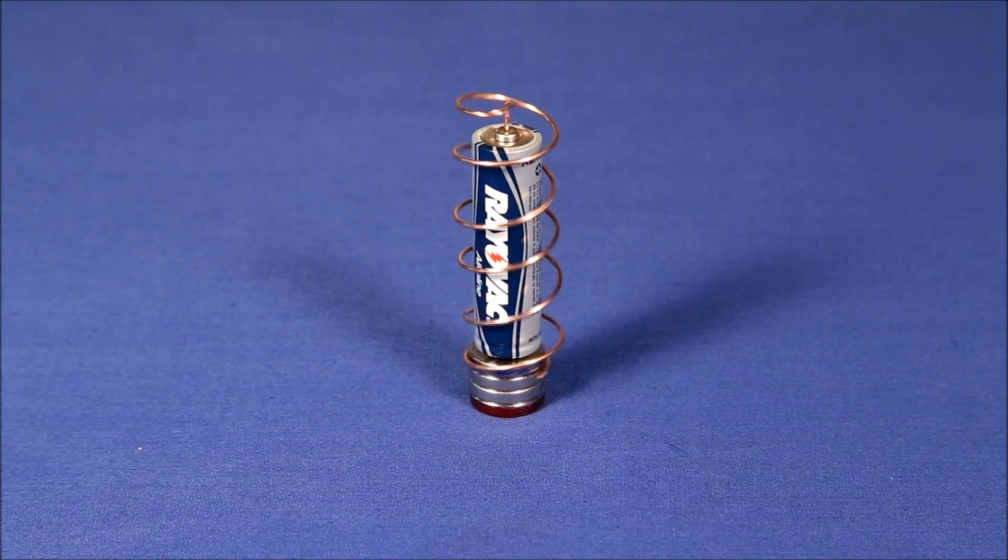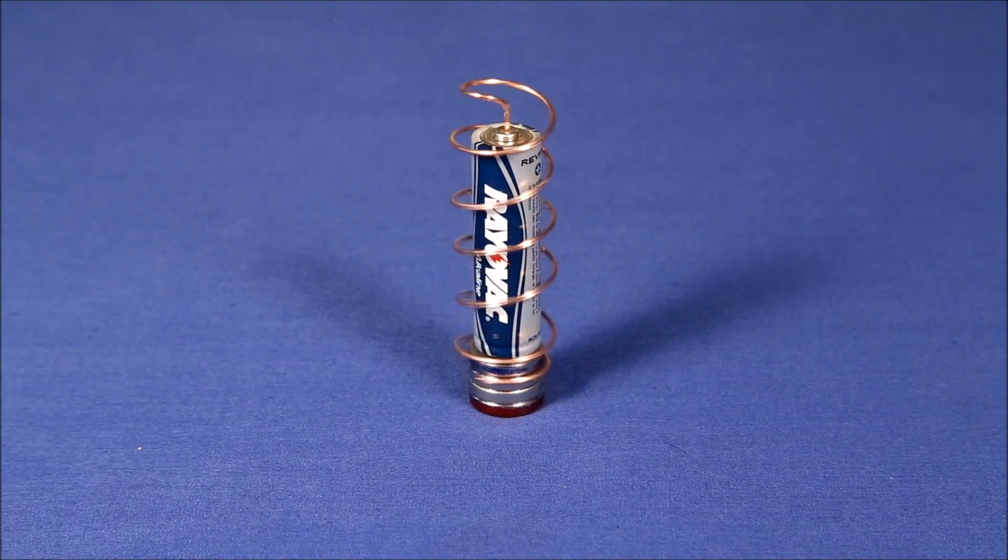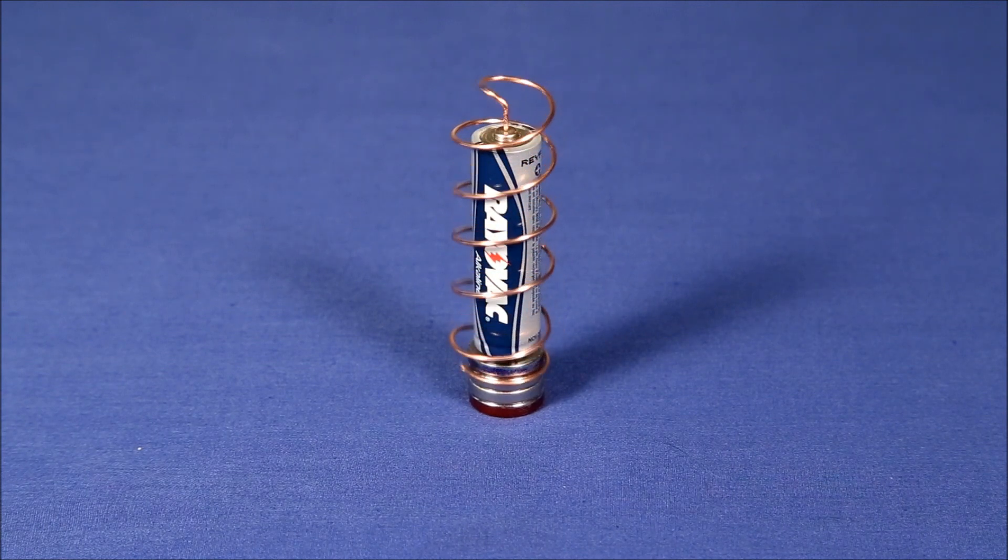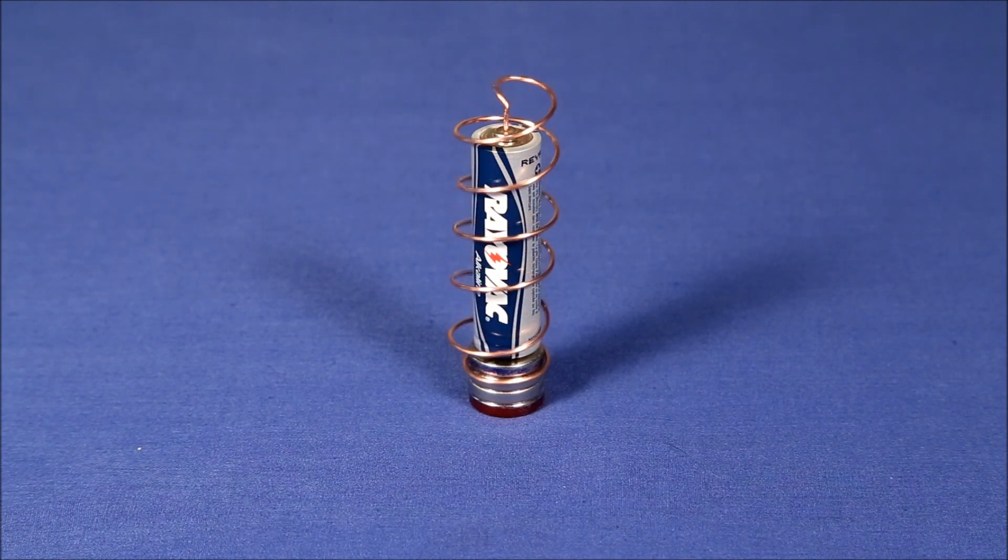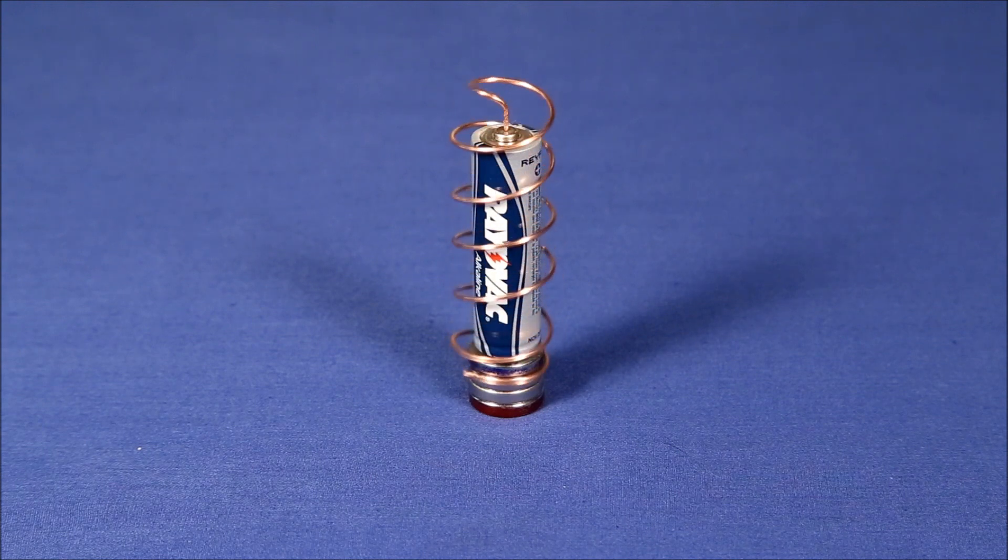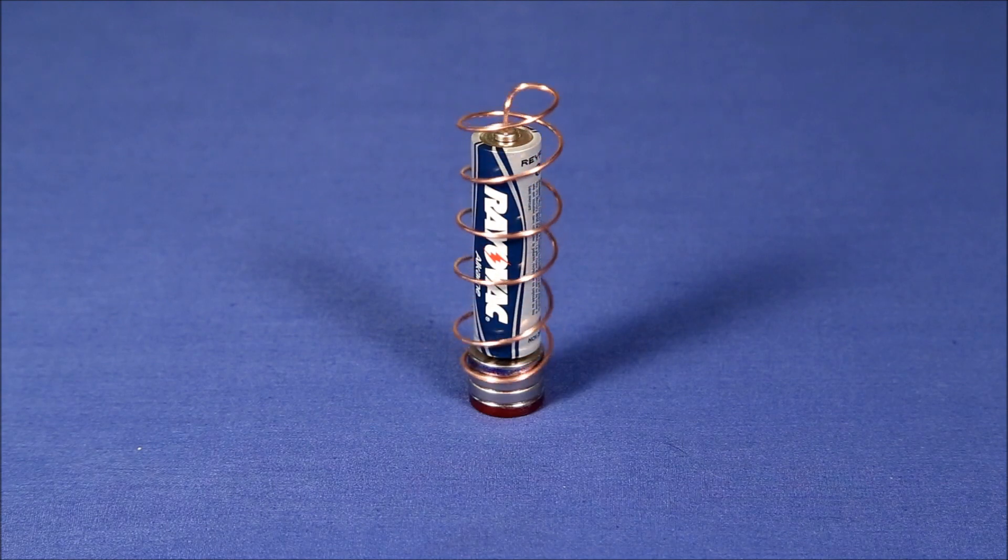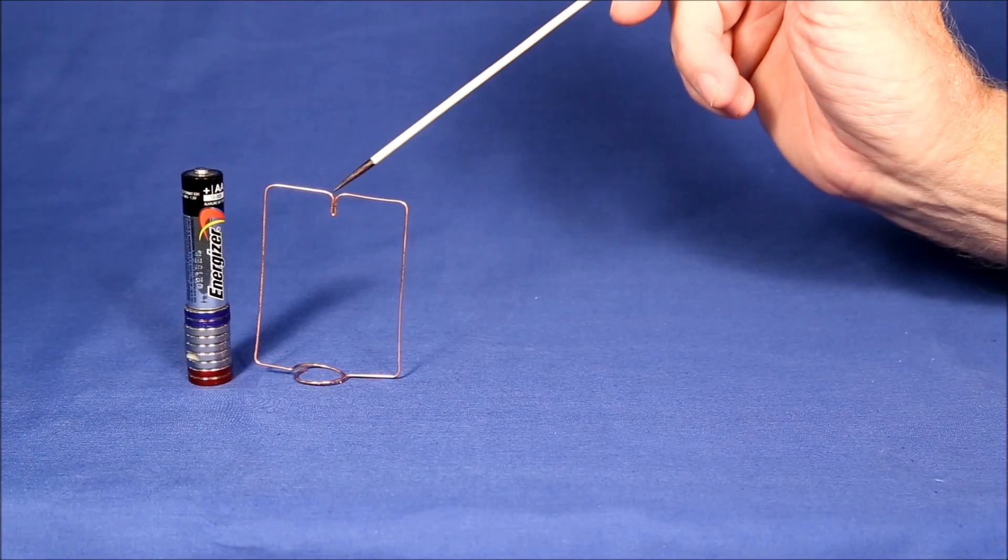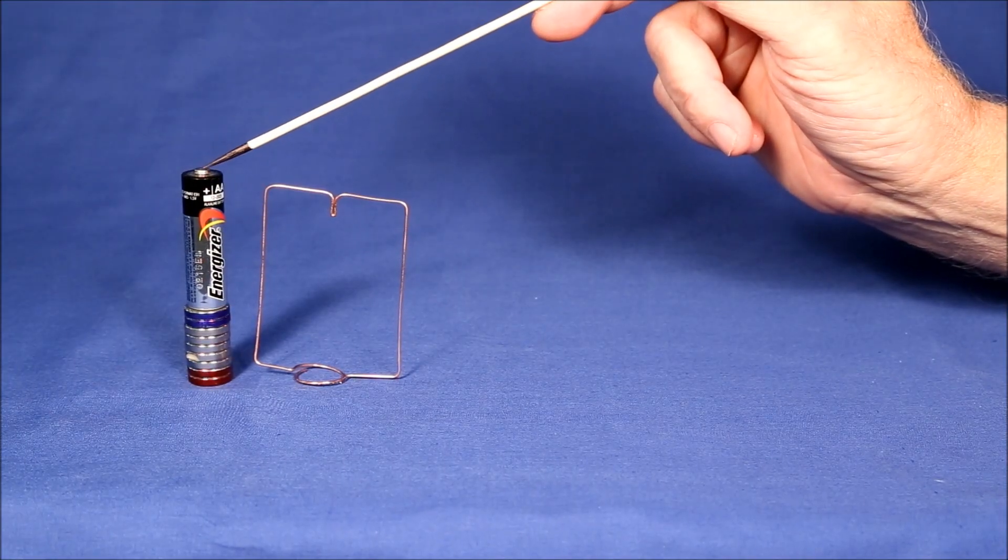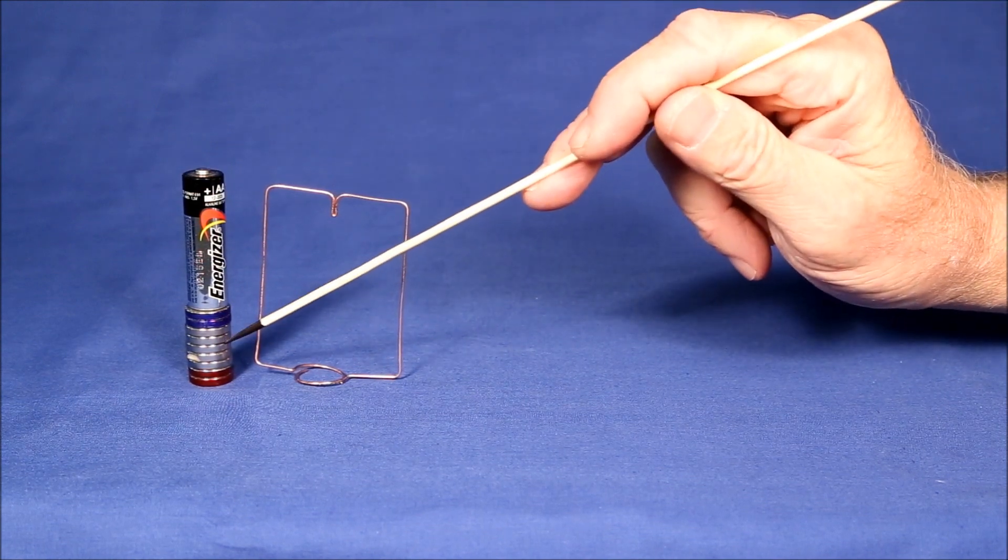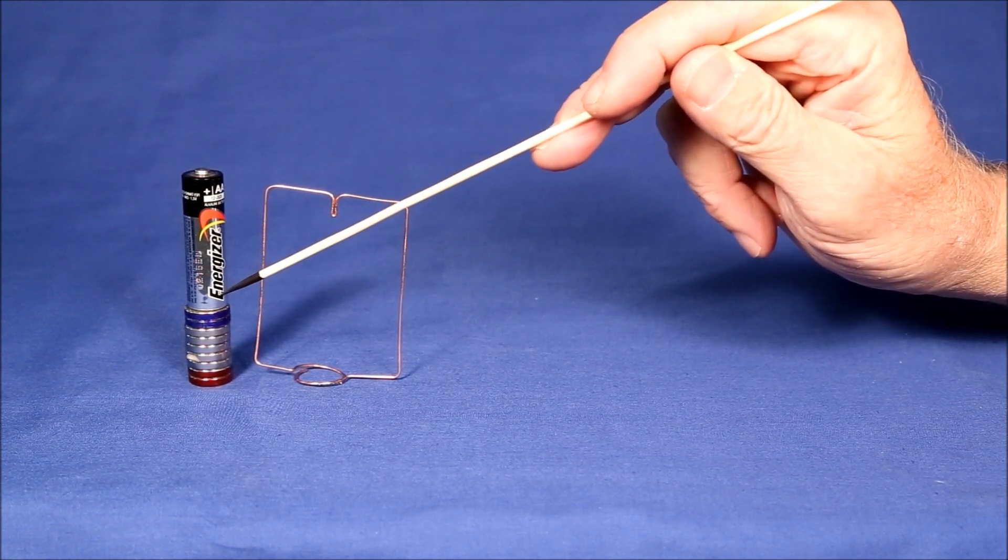A homopolar motor is a motor where the current always flows in the same direction as opposed to a normal electric motor in which the current periodically reverses or is commutated during every revolution. When the armature is placed on top of the battery, current flows out of the top, down the sides, into the magnets, and back into the battery completing the circuit.